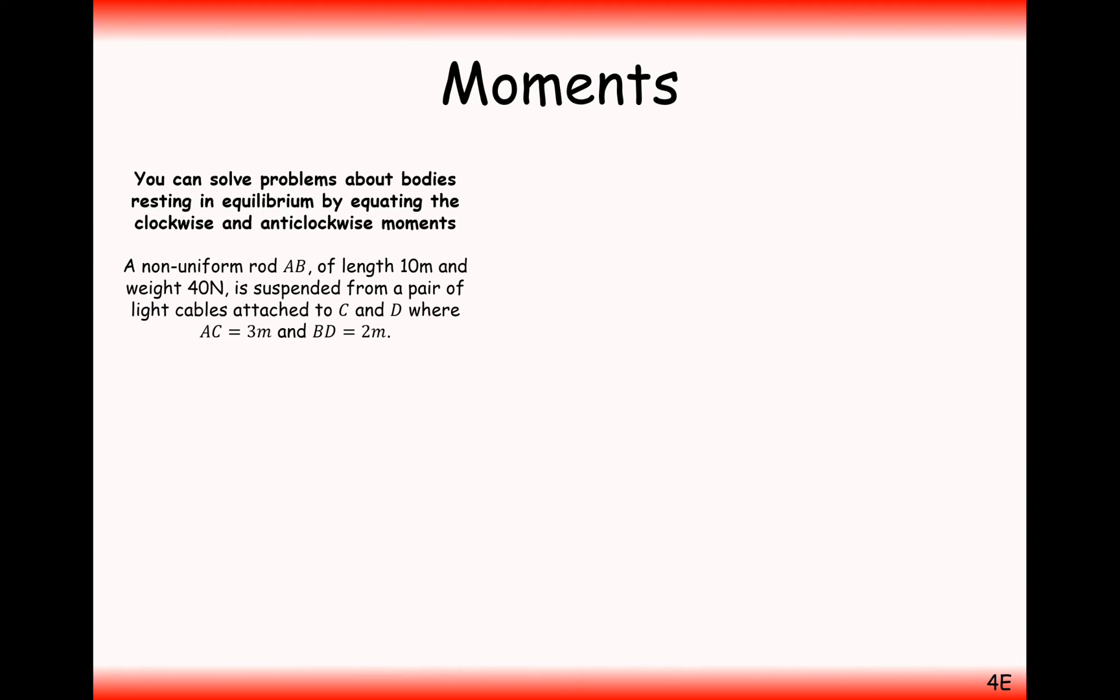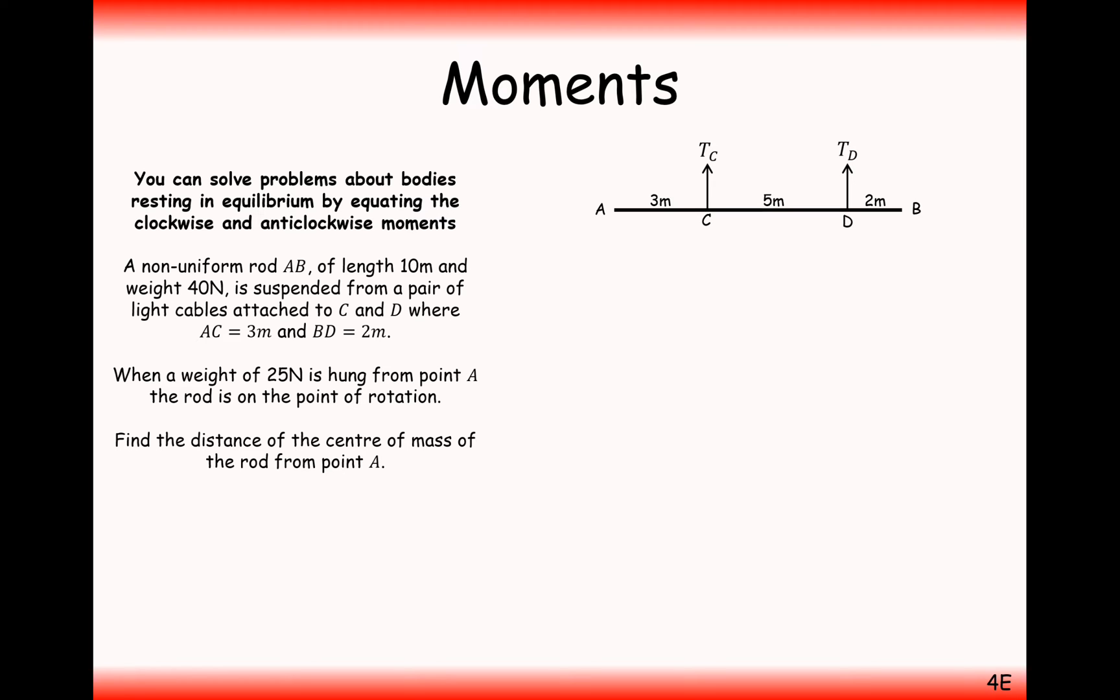Another quick question here then. A non-uniform rod of length AB is 10 metres of weight 40 newtons, and it's suspended from a pair of light cables C and D, where AC is 3 metres, and BD is 2 metres. Let's go ahead and draw that diagram. It's a non-uniform rod, so I can't just place the centre of mass in at the centre. When a weight of 25 newtons is hung from point A, the rod is on the point of rotation around C. Find the distance of the centre of mass from the point A.